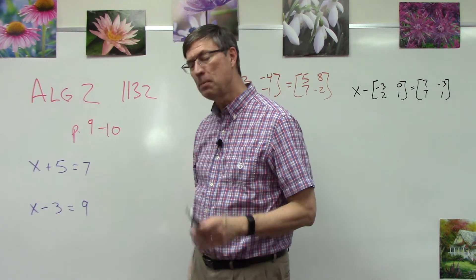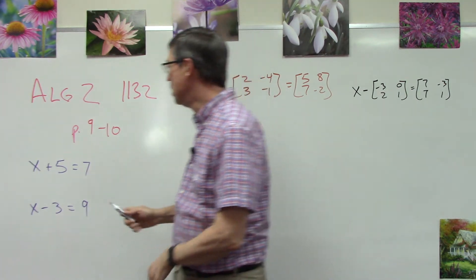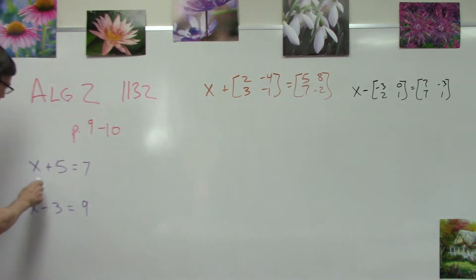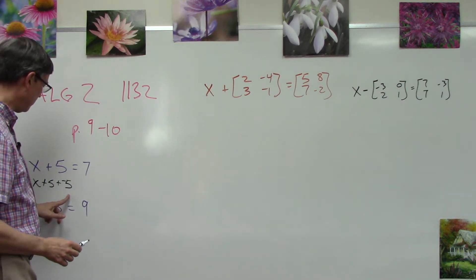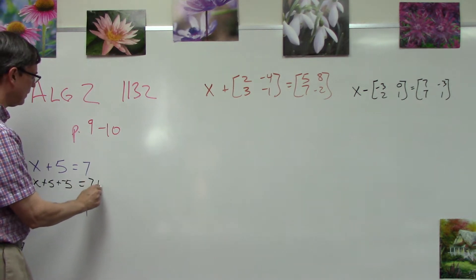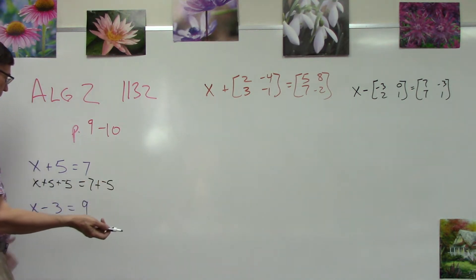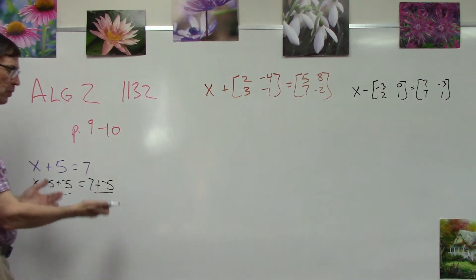We're actually saying x + 5 and then plus its opposite. We call this the additive inverse, so -5 + 5, and then over here we're going to do 7 + (-5). So we're adding the same thing to both sides and that would give you 2, wouldn't it?